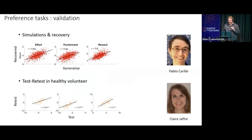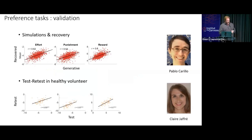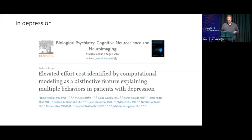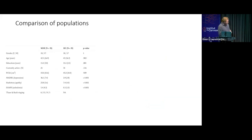We validated this approach with my two fantastic students, Pablo Cario and Claire Joffrey. We did simulation and parameter recovery to verify we were able to recover injected parameters. We did test-retest validation with the same participants twice, four weeks apart, to verify the measures are meaningful. We used it in patients with depression compared to healthy controls — 35 depressed patients compared to controls matched in terms of gender, age, and education.